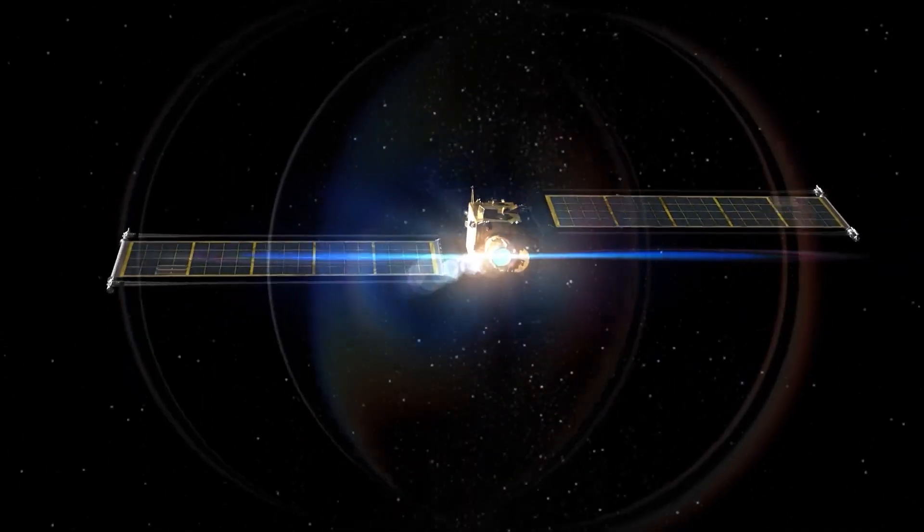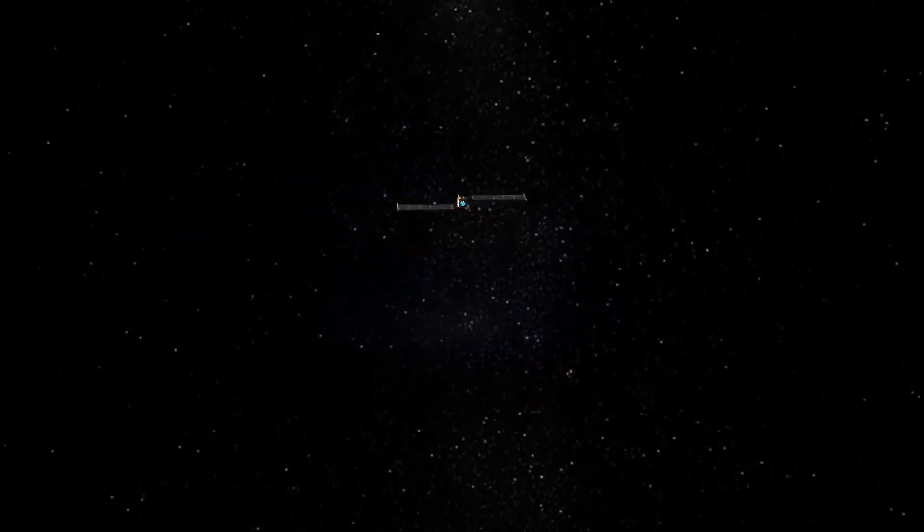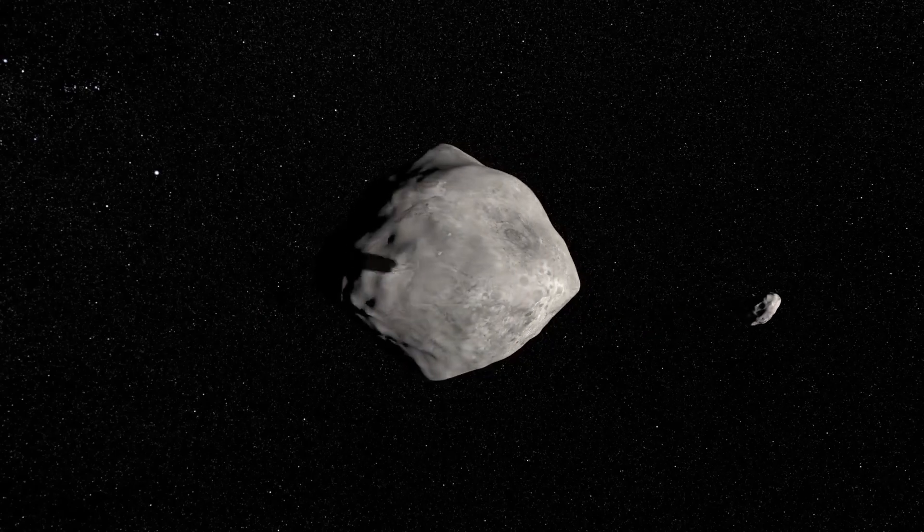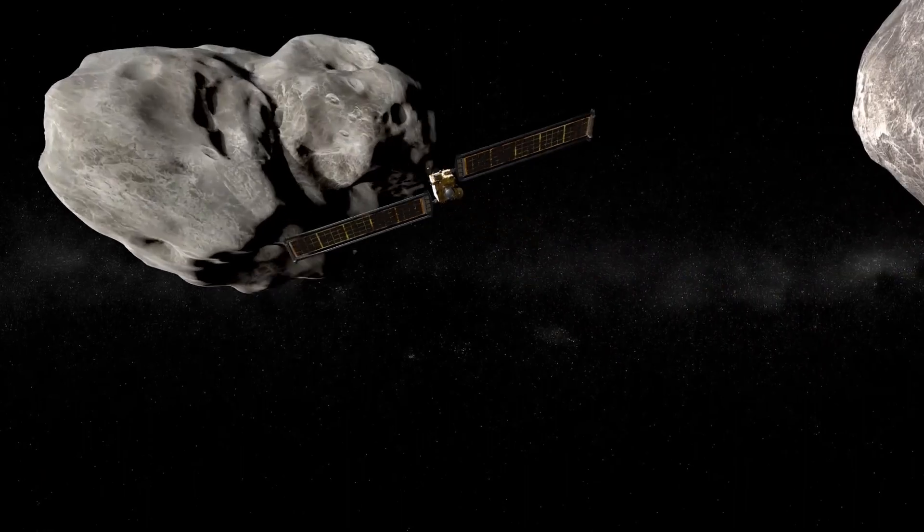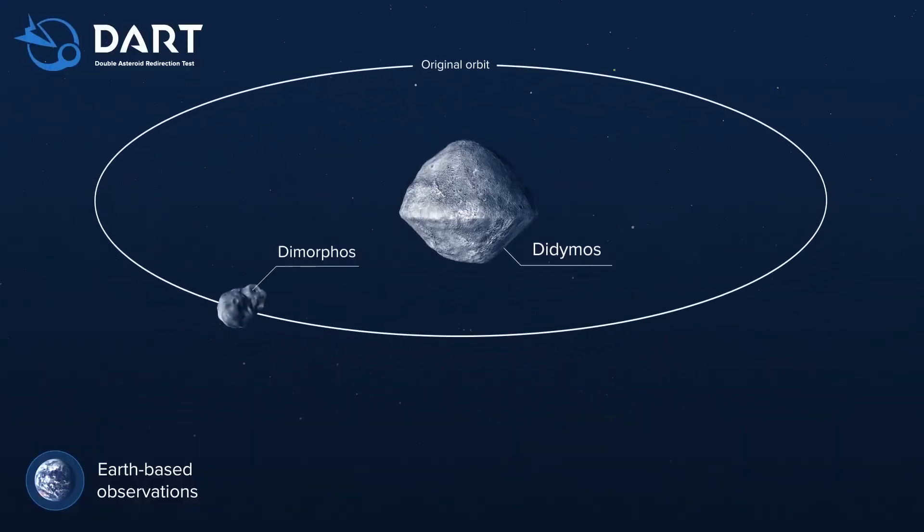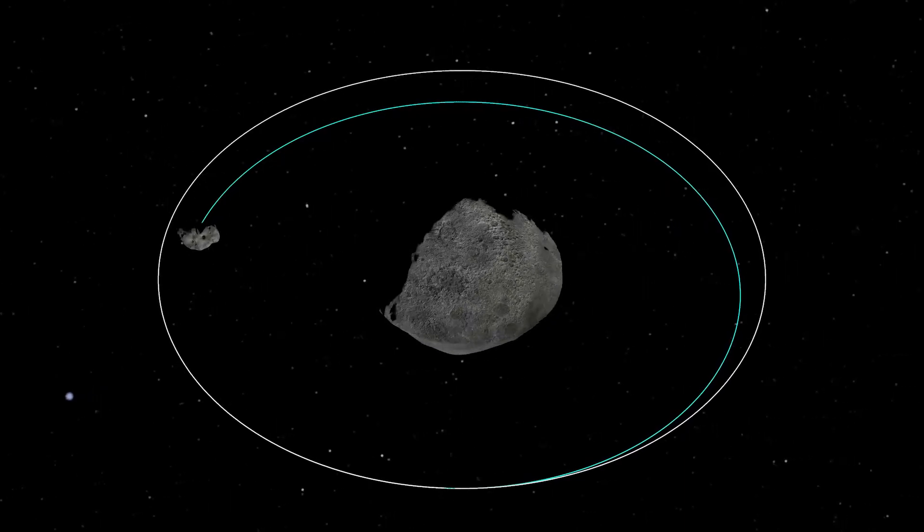The DART spacecraft will be hitting an asteroid called Dimorphos. It's special because it's a binary asteroid, which means a satellite around a larger asteroid called Didymos. And DART will actually be hitting Dimorphos. And what we will be measuring is how much DART changes the orbit of Dimorphos around Didymos.